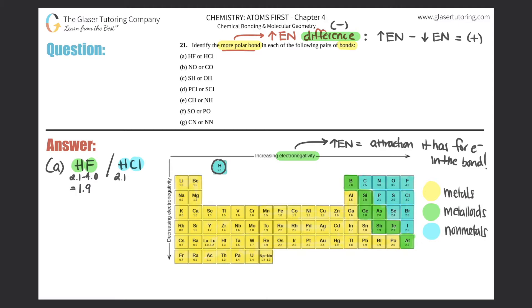For HCl: hydrogen has an electronegativity of 2.1 and chlorine is 3.0. Subtracting, 3.0 minus 2.1, you get 0.9. Since 1.9 is larger than 0.9, HF has a larger electronegativity difference, making it the more polar bond. The answer for a is HF.